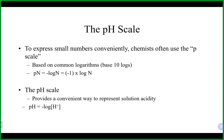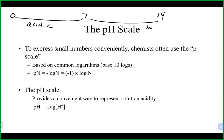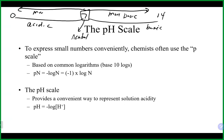The pH scale runs from 0 to 14, with 7 as the center point. Less than 7 is acidic; greater than 7 is basic; exactly 7 is neutral — that's when both concentrations equal 1 × 10⁻⁷. As you go toward 14, you become more basic; as you go from 7 toward 0, you become more acidic.